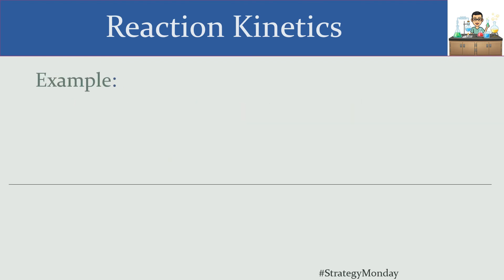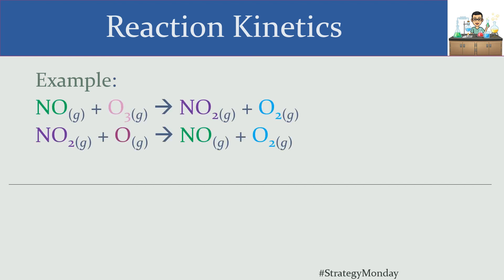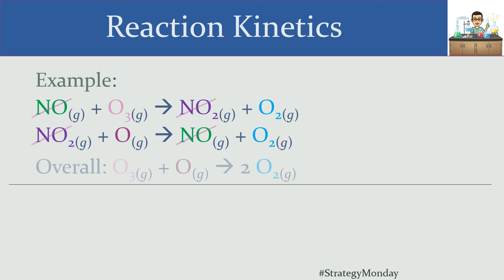Now let's look at an example problem. We have two reactions happening one after the other. To find the overall reaction, I look at nitric oxide (NO) — it's a reactant in the first step but gets regenerated as a product in the second step, so the NOs cancel out. NO₂ appears as a product in the first reaction and as a reactant in the second, so those cancel too. The overall reaction is just ozone (O₃) plus the oxygen radical (O) generating two molecules of oxygen (O₂).